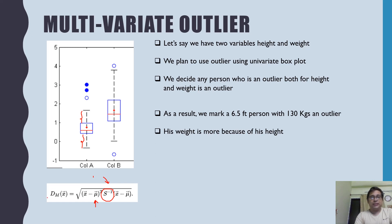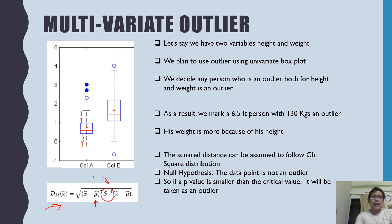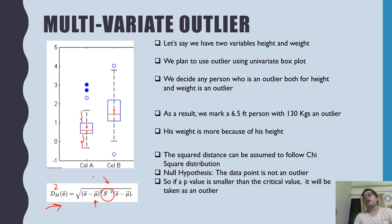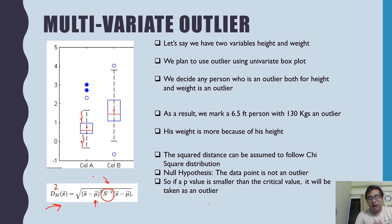To use this distance for outlier detection, you compute this Mahalanobis score for all observations and set up a hypothesis test. The squared Mahalanobis distance can be assumed to follow a chi-square distribution, with degrees of freedom equal to the number of variables. The null hypothesis is that the data point is not an outlier. If the p-value is smaller than the critical value alpha, it is taken as an outlier. This is how Mahalanobis distance is used as a multivariate outlier detection technique.